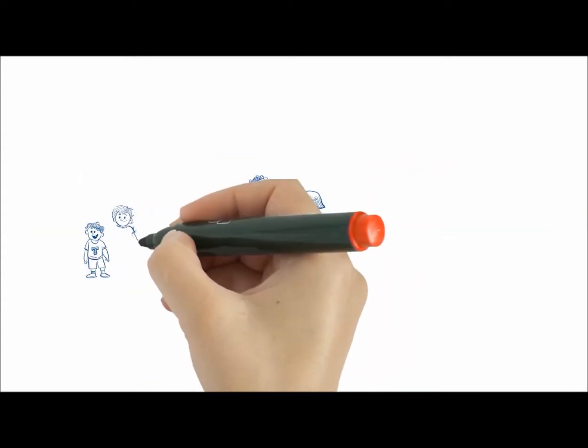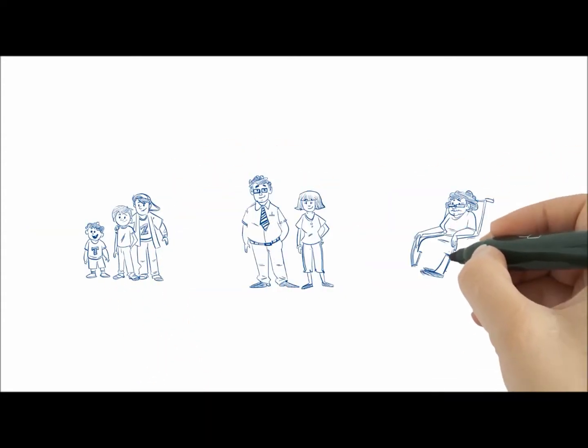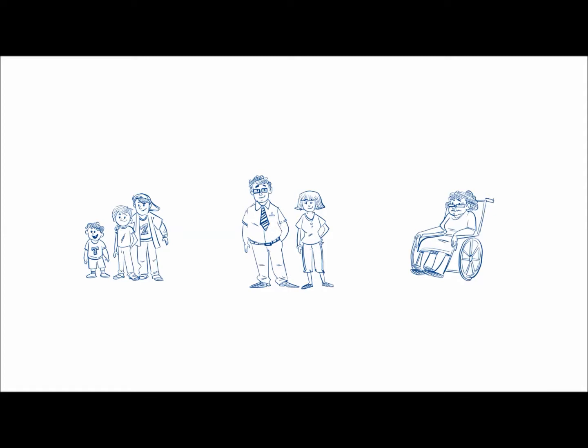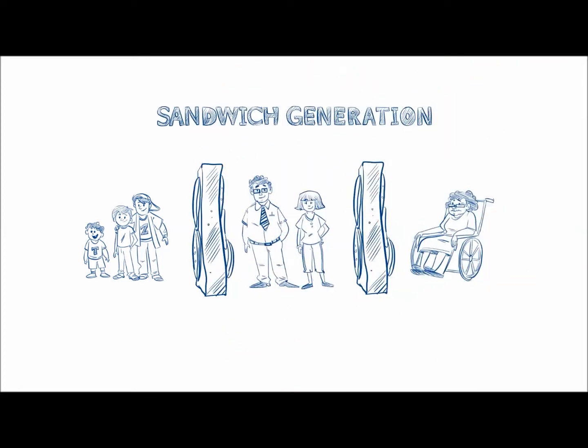Bob and Laura have three kids. They're also taking care of Laura's mom, who's in her 80s. They are sandwiched between their younger kids and their older parents.